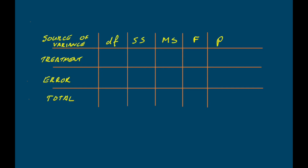The total degrees of freedom are n minus 1. Because we calculated a single mean, the degrees of freedom for the total sum of squares are n−1, which equals 23 in our case. For the treatment degrees of freedom, in a single-factor ANOVA, that's the number of levels in the factor minus 1. We have three levels — A, B, and C — so that's 3−1 = 2. The error degrees of freedom are simply the total minus the treatment degrees of freedom, giving us 21.